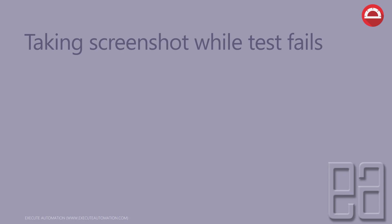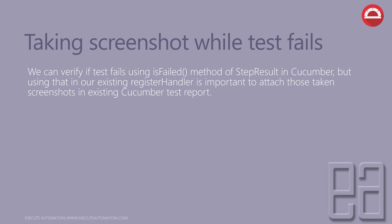Taking a screenshot while a test fails is one of the most common things we do. If any test fails, we need to take a screenshot and store it somewhere within our directory so we can see what happened during execution. It would be very nice if we also attach the screenshot within our Cucumber test report. We can verify if the test fails using the isFailed method of a step result in Cucumber.